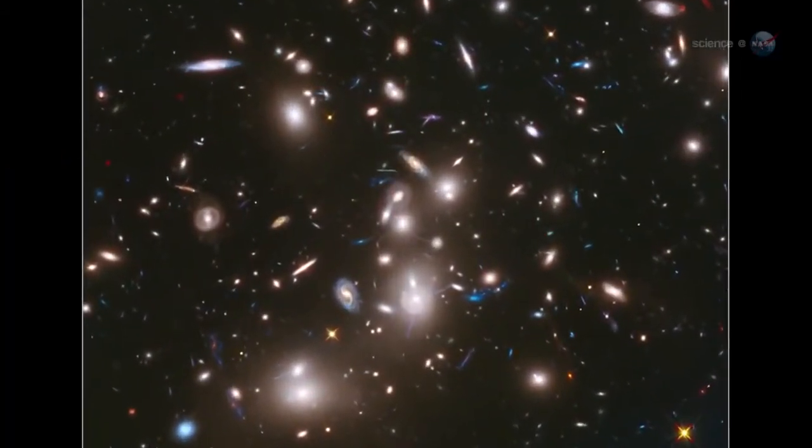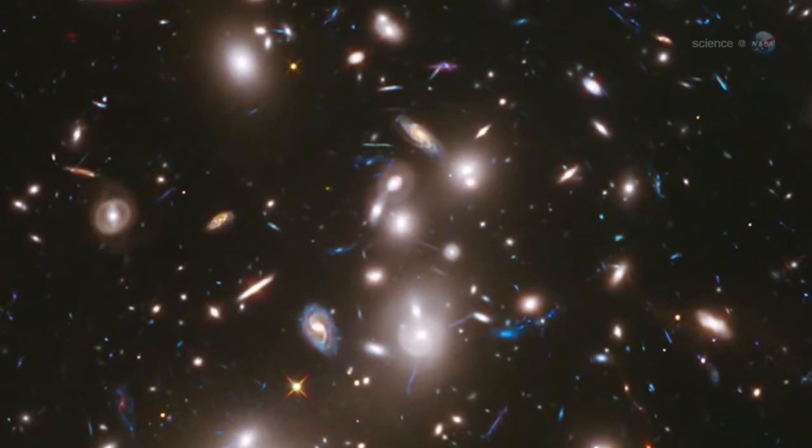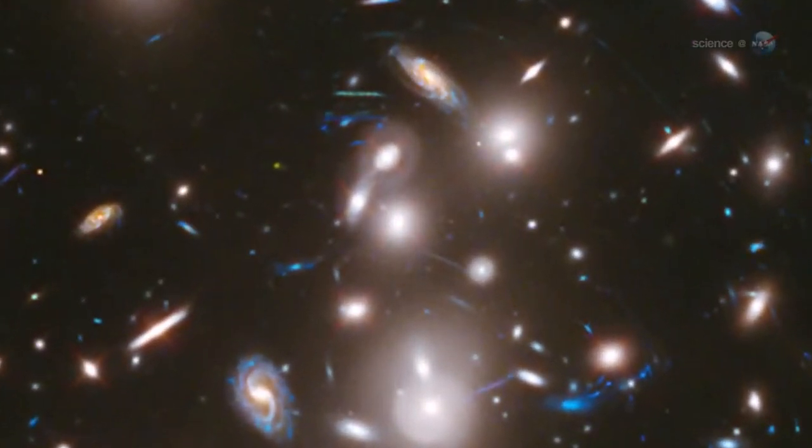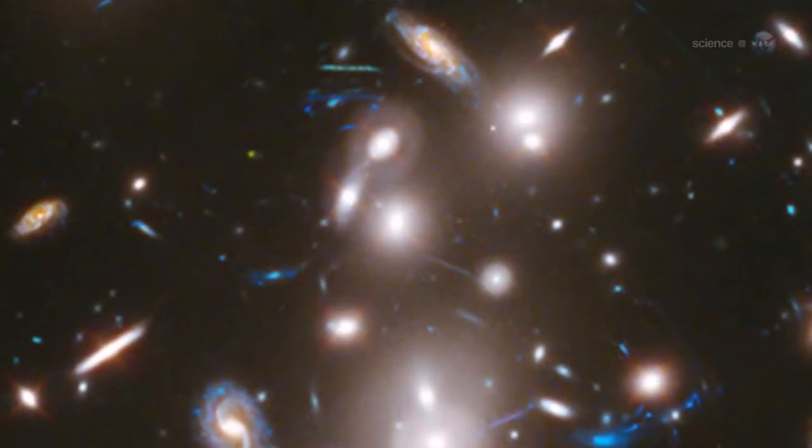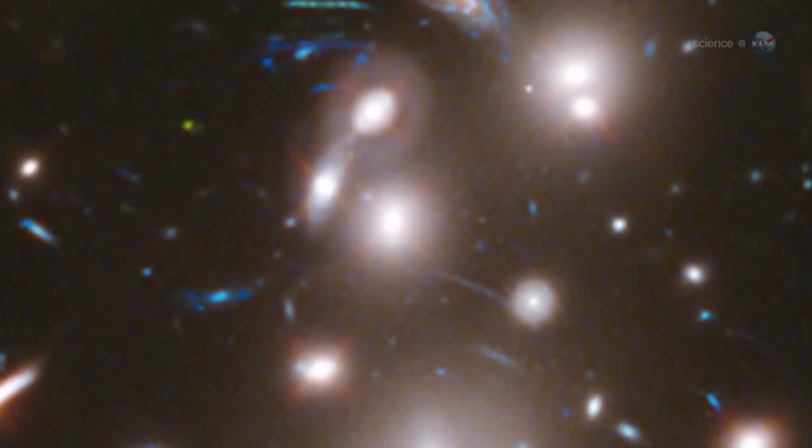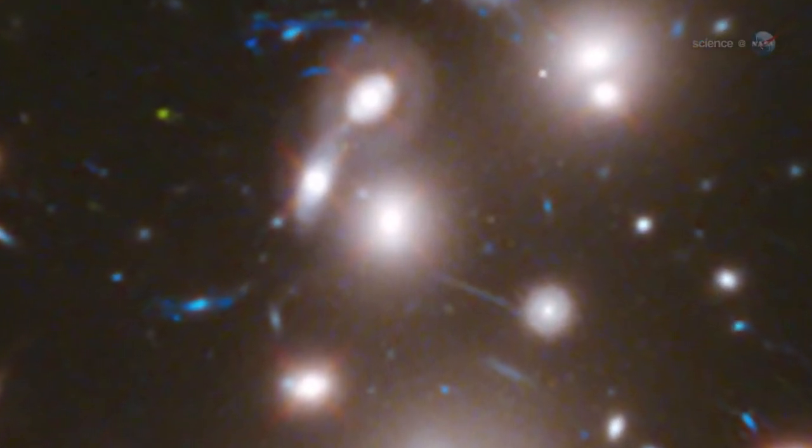Overall, the Hubble exposure of Abell 2744 revealed almost 3,000 distant galaxies, magnified as much as 10 to 20 times brighter than they would normally appear. Without the boost of gravitational lensing, almost all of those background galaxies would be invisible.